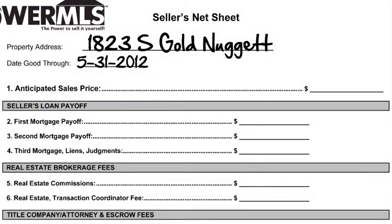A lot of time passes from the time you first list your home until you go under contract. That's why we also recommend you prepare a revised net sheet just before you go under contract. Now let's look at line one: your anticipated sales price. The goal of completing a net sheet is to calculate your net proceeds. To do this, you need an anticipated sales price.